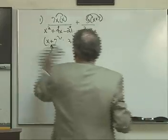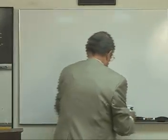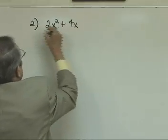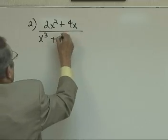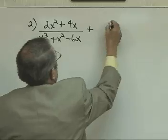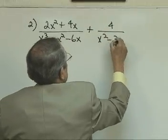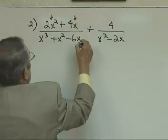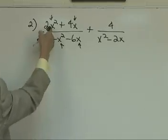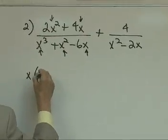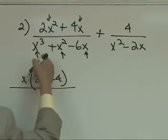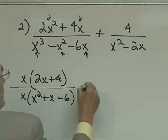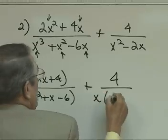Let's try another one. Look at (2x² + 4x) divided by (x³ + x² − 6x) plus 4 divided by (x² − 2x). All terms have an x in them. Factor x out of the first numerator, leaving 2x + 4. Factor x out of the first denominator, leaving x² + x − 6. Factor x out of the second denominator, leaving x − 2. The negative in x² + x − 6 tells me I'll have an x-plus and an x-minus factor, and we can cancel those x's.